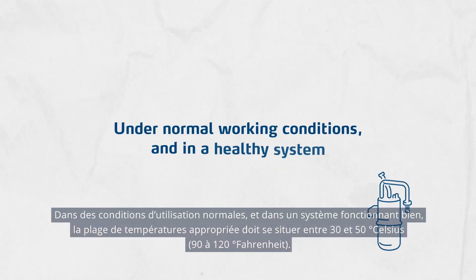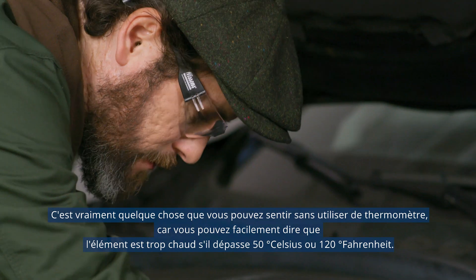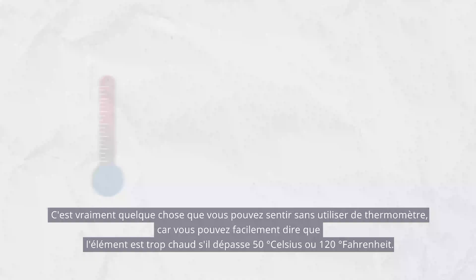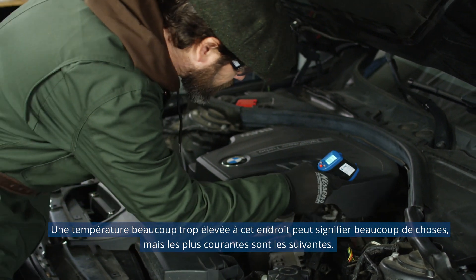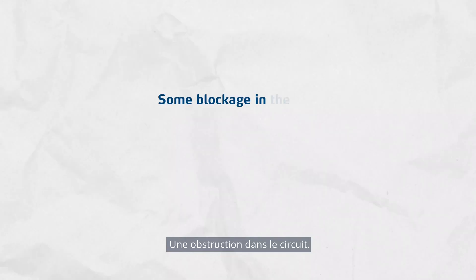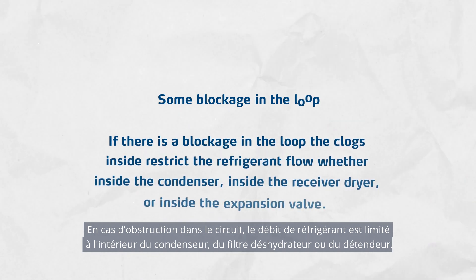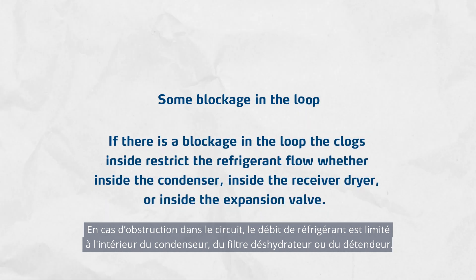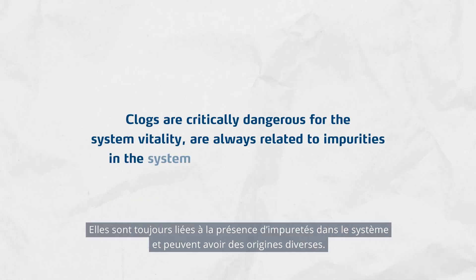Under normal working conditions and in a healthy system, the proper temperature range should read between 30 to 50 degrees Celsius or 90 to 120 degrees Fahrenheit. This is something you can sense without a thermometer, because you can easily tell the element is too hot if it's above 50 degrees Celsius or 120 degrees Fahrenheit. A temperature that is way too high at this spot can mean many things, but here are the most common: some blockage in the loop. If there is a blockage, the clogs inside restrict the refrigerant flow — whether inside the condenser, inside the receiver dryer, or inside the expansion valve. Clogs are critically dangerous for the system and are always related to impurities in the system.